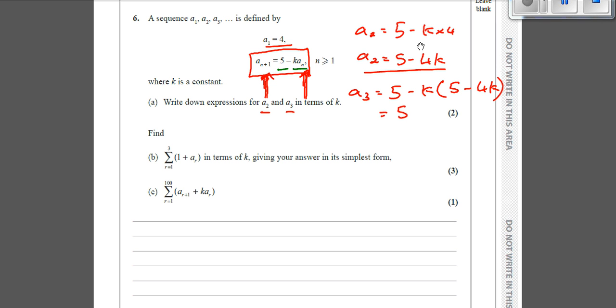Now if we do that, if we multiply out and simplify it, 5 minus k times 5 is going to be minus 5k. Minus k times minus 4k, be careful with the signs there. Plus 4k squared. That's okay to leave it like that. If you want to write it as 4k squared minus 5k plus 5, that's also fine.